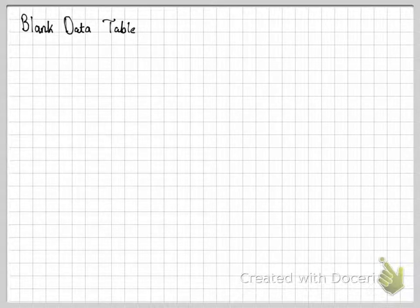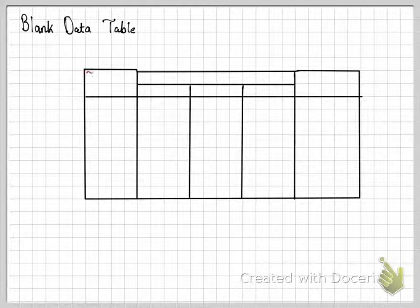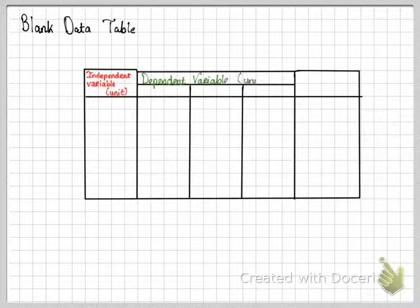You need to include the quantities that you have mentioned in your materials list. A nice way of structuring the table is as follows. Include your independent variable and its unit. So if that was temperature or if that was distance, you would include degrees Celsius or meters. Dependent variable should be included as well along with its unit.